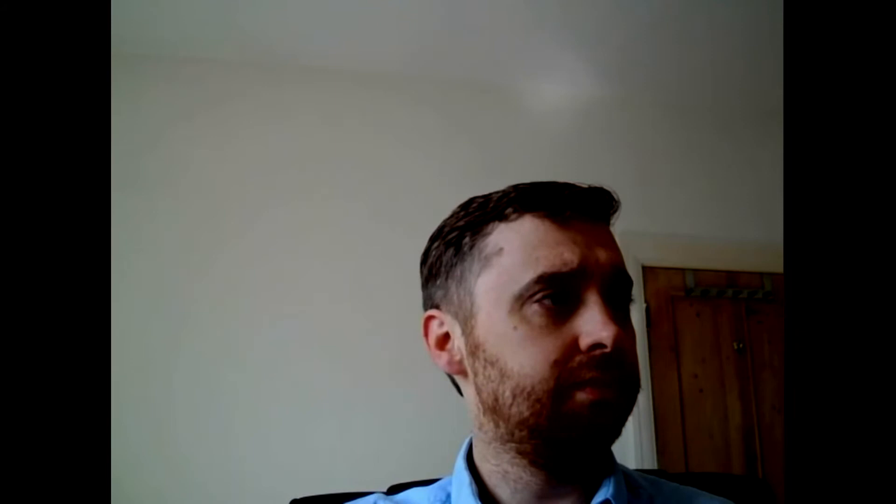One key insight of this approach is to think about a computer simulation as a function, a function represented by f of x in the slide here, that transforms input values to output values. We can approximate this function using a statistical model. This emulator provides a stand-in for the simulation that is both simple and transparent, and which can estimate outputs of the simulation almost instantaneously for any combination of input points.